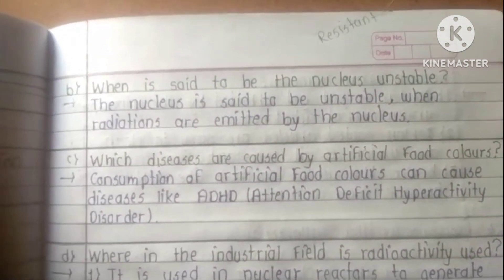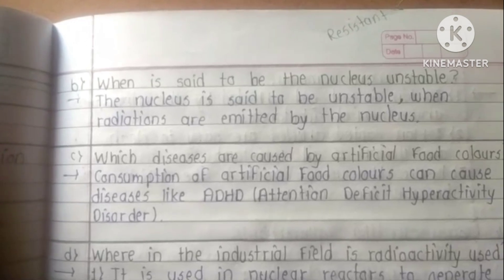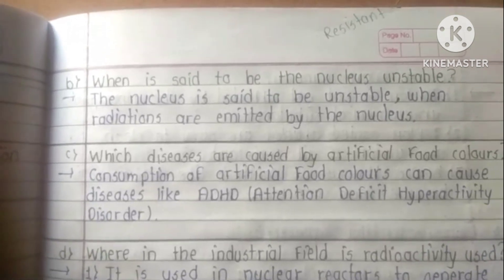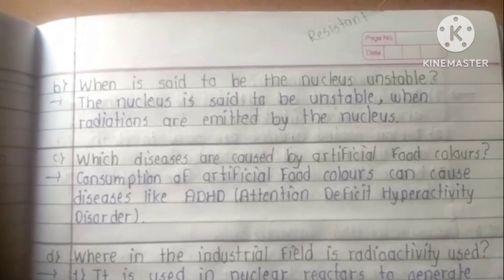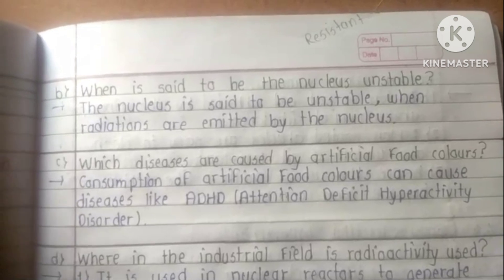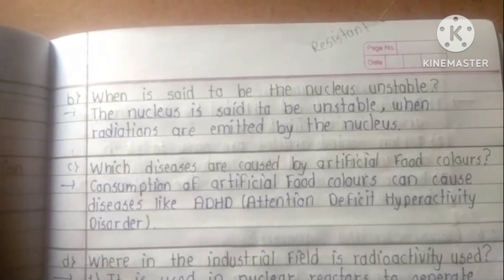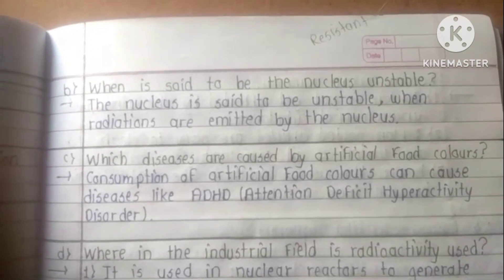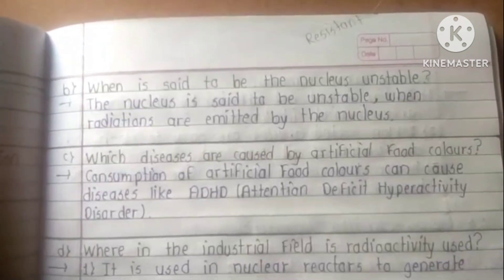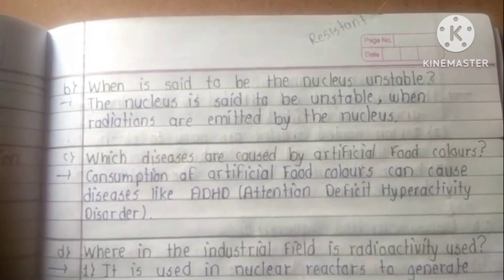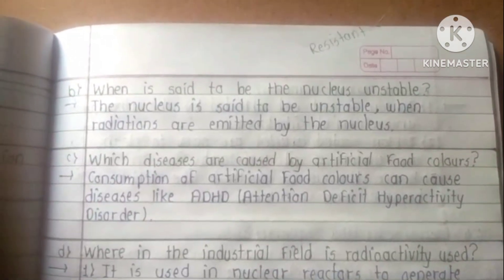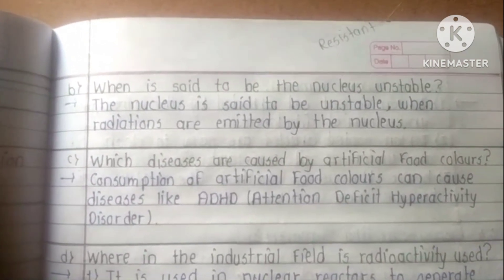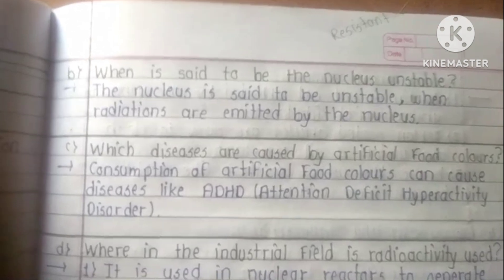When is the nucleus said to be unstable? Answer: The nucleus is said to be unstable when radiations are emitted by the nucleus. Which disease is caused by artificial food colors? Answer: Consumption of artificial food colors can cause disorders like ADHD – Attention Deficit Hyperactivity Disorder.